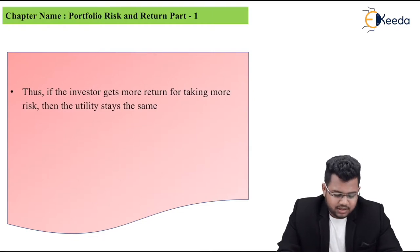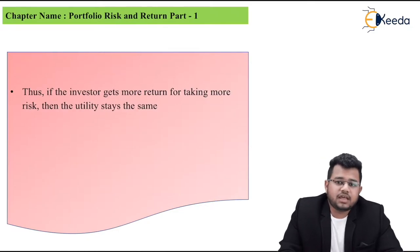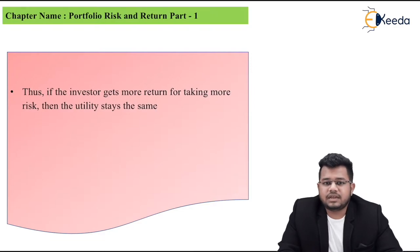Now if ER is 12% and variance is 5%, both increased. ER went from 8 to 12, and variance from 1 to 5. This means extra return and extra risk. Then utility function will be 0.12 minus 0.5 into 2 into 0.05. Utility will again be 7%. Thus, if the investor gets more return for taking more risk, then the utility stays the same. This proves that if I'm risk averse and I take more risk for more return, my utility remains the same.